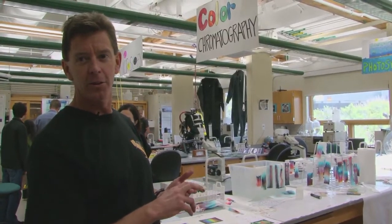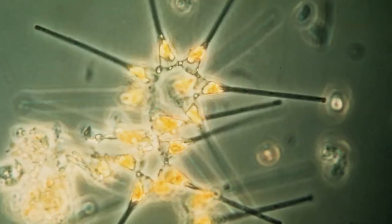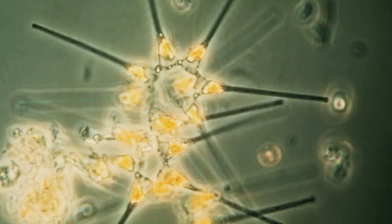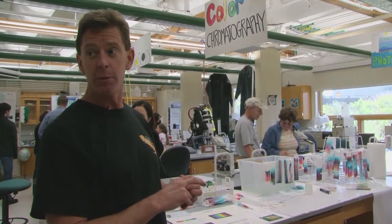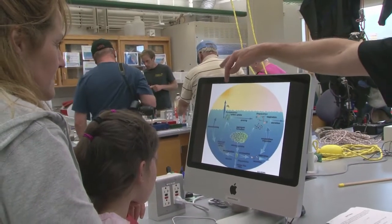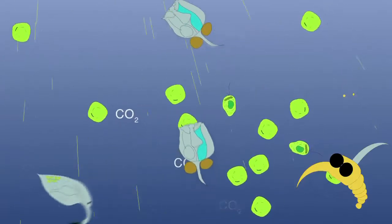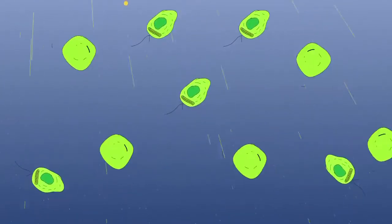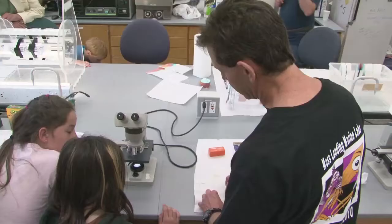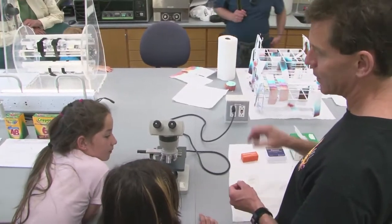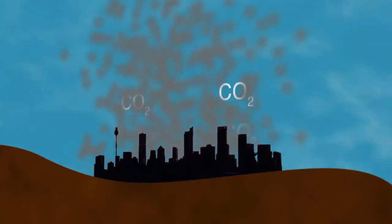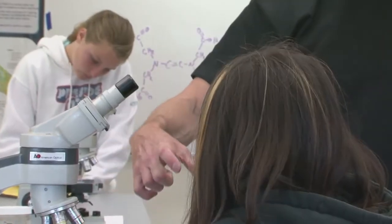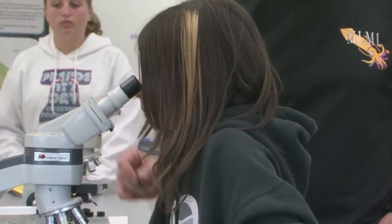Phytoplankton include all of the photosynthetic, microscopic plants in the ocean, which, among other things, generate about 50% of the oxygen we breathe. If you look at their role in feeding things and absorbing carbon dioxide, they do some really important things for us. So it's also very important to understand what the phytoplankton are doing when we're dumping all of our carbon dioxide into the atmosphere. They're viewed as a potential major source for absorbing carbon dioxide.